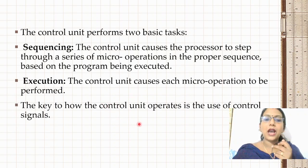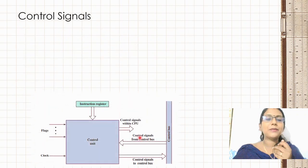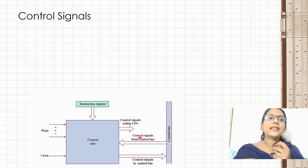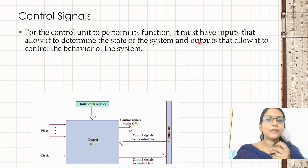The key to how the control unit operates is the use of control signals. For the control unit to perform its function, it must have inputs that allow it to determine the state of the system, and outputs that allow it to control the behavior of the system.